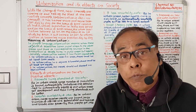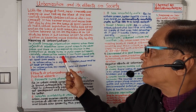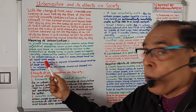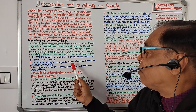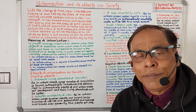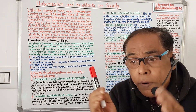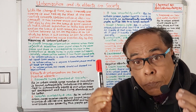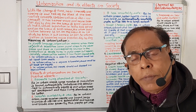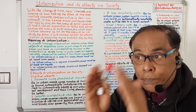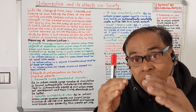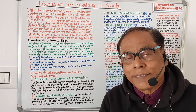But actually, urbanization has three important ingredients. Number one, in a specific area there must be at least 5,000 people. Number two, in a square kilometer there must be at least 400 people. And number three, 75% of people in that area do not depend on agriculture. This is the actual meaning of urbanization.